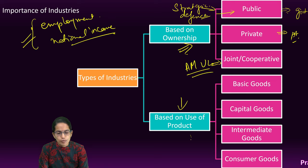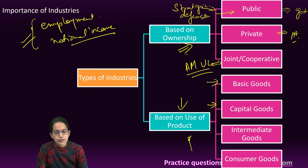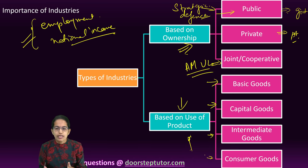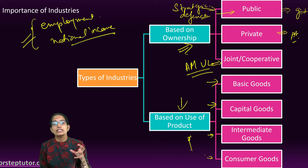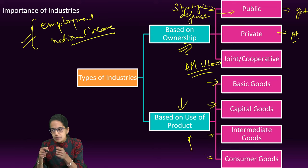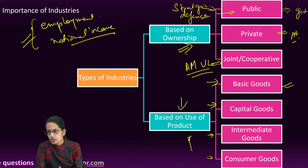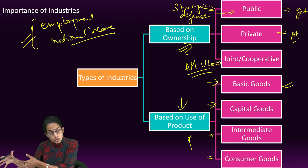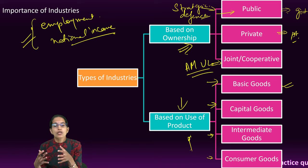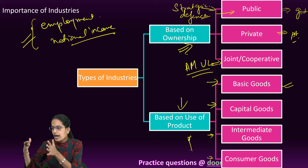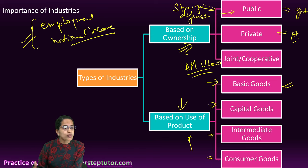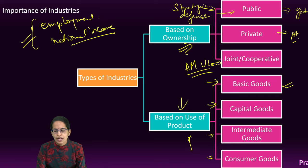Based on the use of product, an industry can be called a basic good industry, capital good industry, intermediate good industry, or consumer goods industry. A basic good industry manufactures the basic material — for example, machinery and manufacturing plants required for the functioning of an industry. Capital goods are assets such as buildings, machinery, tools, and vehicles that are used for a prolonged period and are used in the process of making finished goods, not the finished goods themselves.